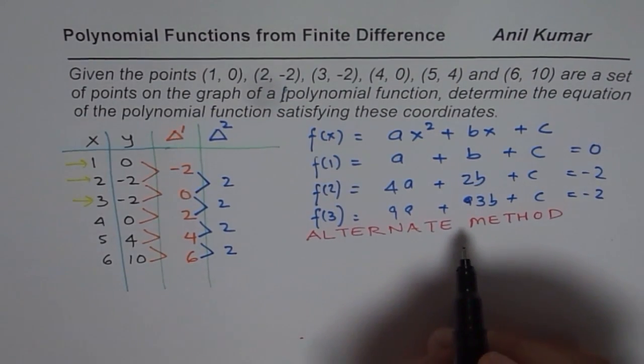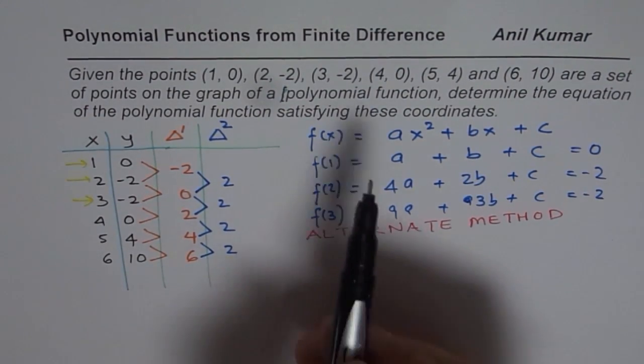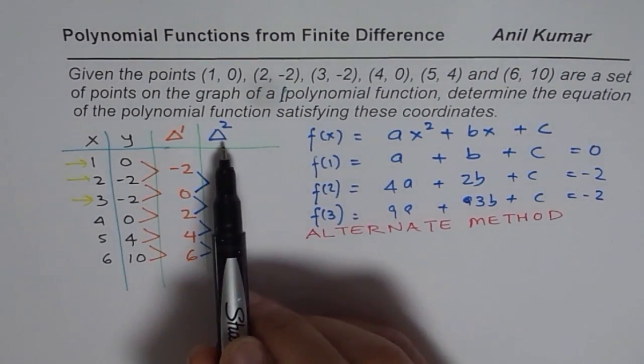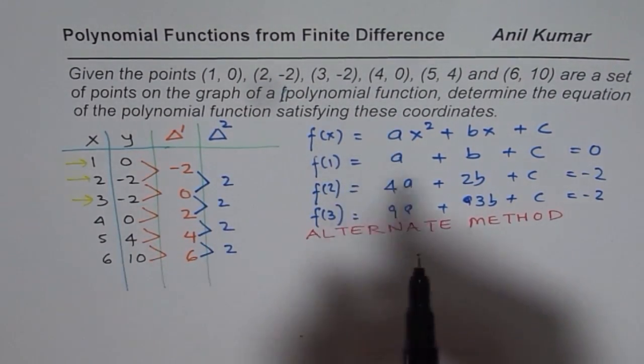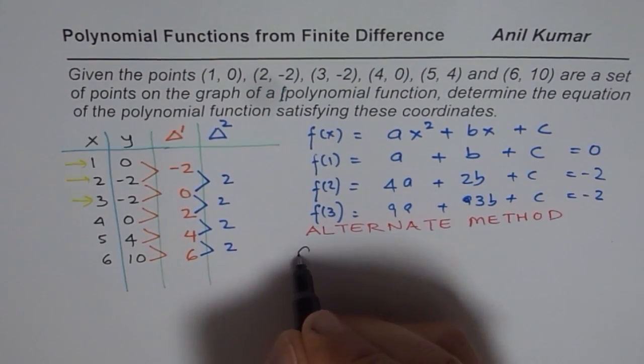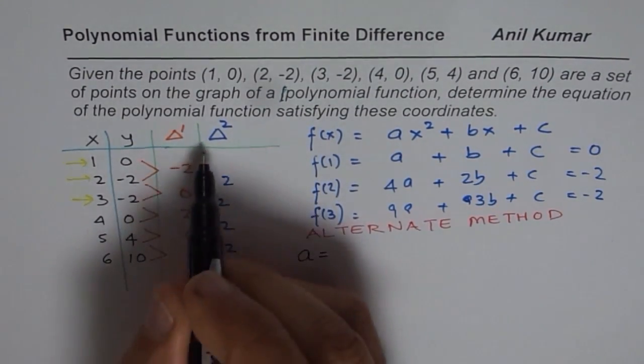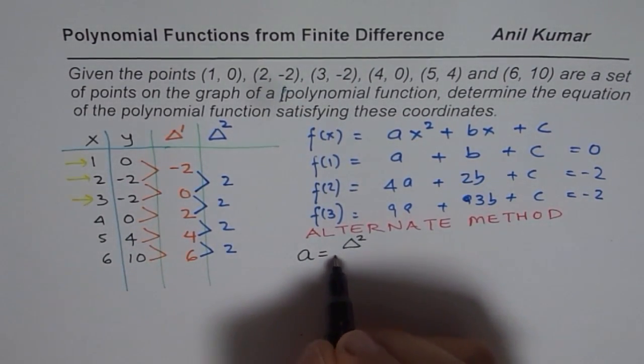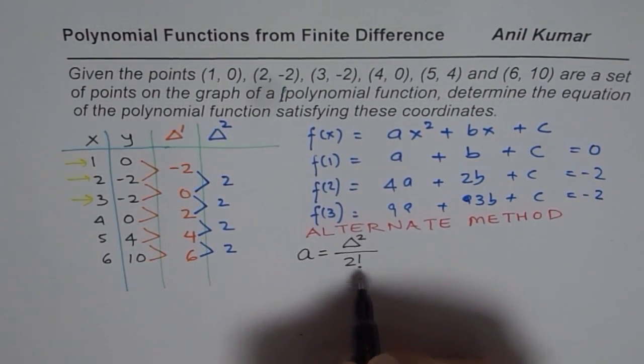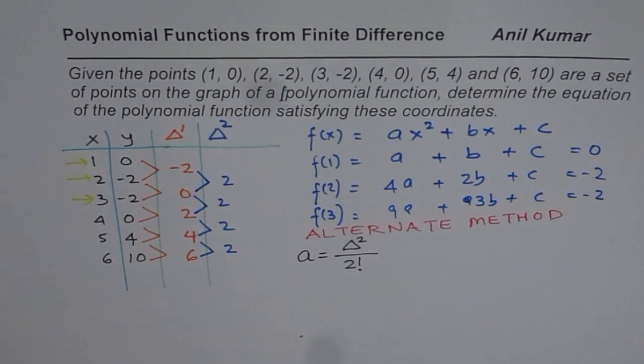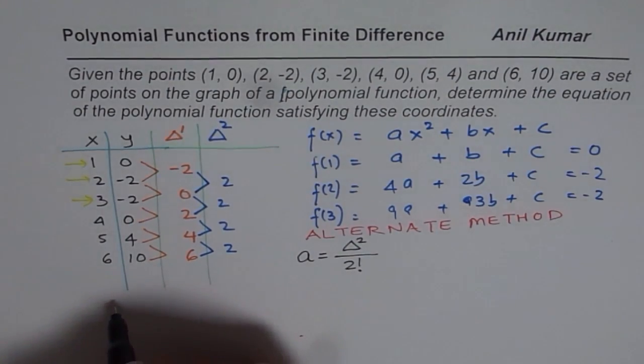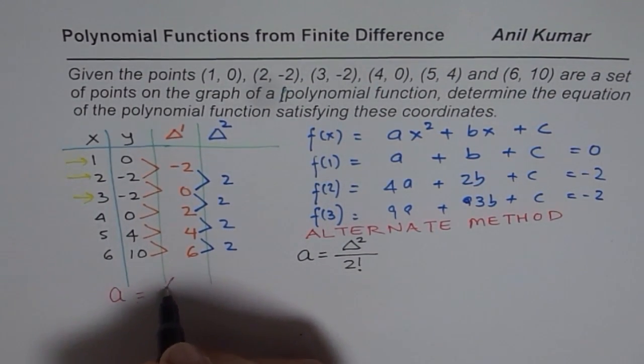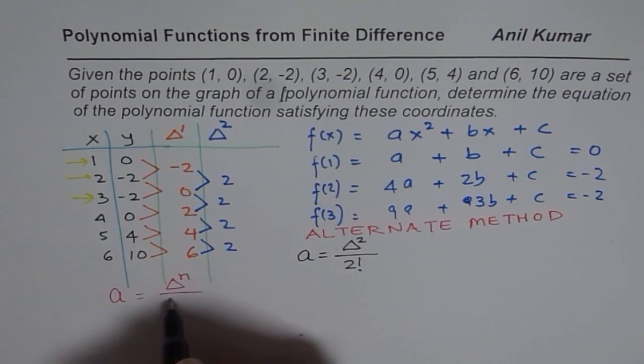Now this method is going to cut down all the steps to less than half and will ensure correct answer all the time. You will save a lot of time in the test and ensure 100% marks. Now in alternate method, what I am teaching you here is, there is a relation between the finite difference, this finite difference, and the leading coefficient. The relation is that leading coefficient a is equal to finite difference, and if it is second finite difference, then it will be second finite difference over 2 factorial.